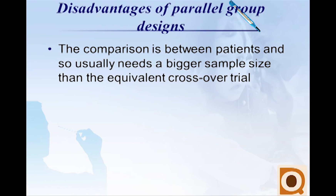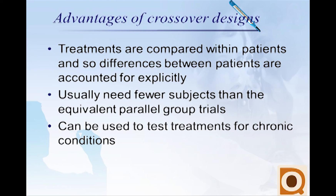The main disadvantage of parallel group designs is that the comparison is between patients, so it usually needs a bigger sample size than the equivalent crossover trial. For the crossover designs, the treatments are compared within patients and so differences between patients are accounted for explicitly. Crossover designs usually need fewer subjects than the equivalent parallel group designs, and they can be used to test treatments for chronic conditions.